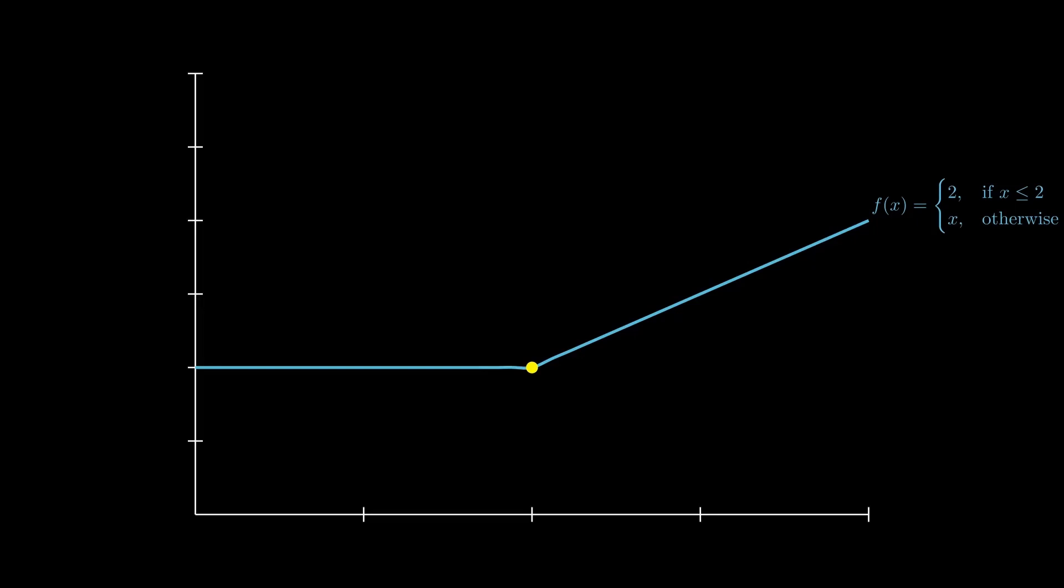Now, for another example, we can take a look at the function from earlier and ask what the subgradient here is. The function definition could look something like this, for example, with the function value being 2 for every x that is smaller or equal than 2, and just x for every x value larger than that.